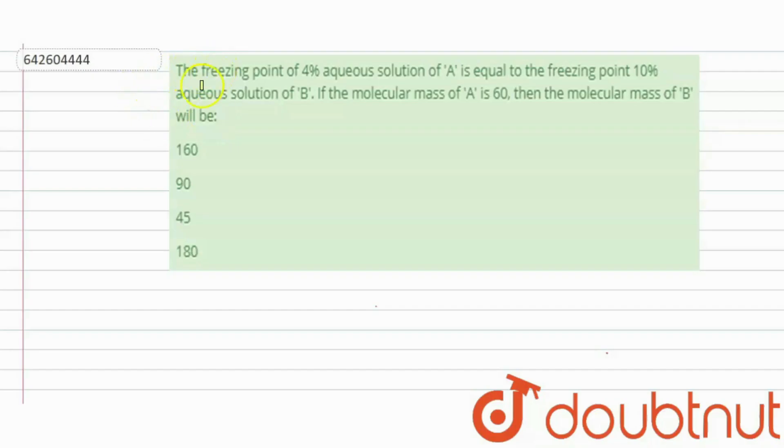Hi everyone, let's take a question. The question says that the freezing point of 4% aqueous solution of A is equal to the freezing point of 10% aqueous solution of B. If the molecular mass of A is 60, then the molecular mass of B will be.